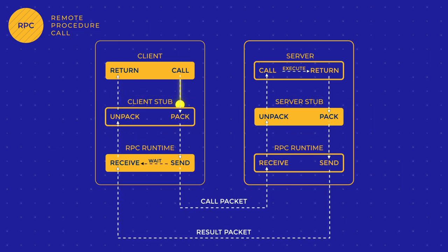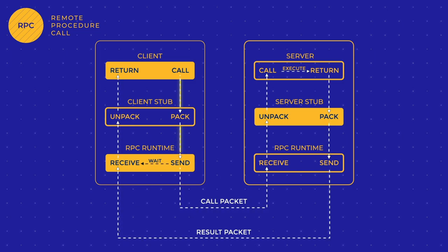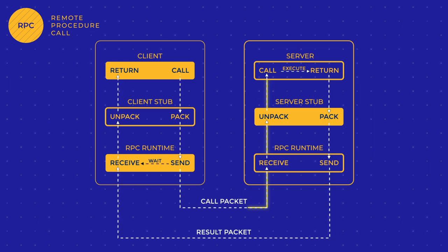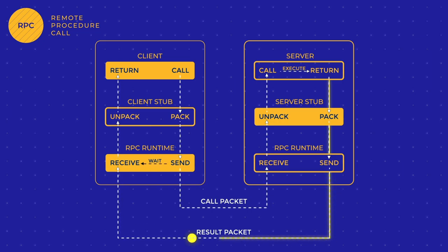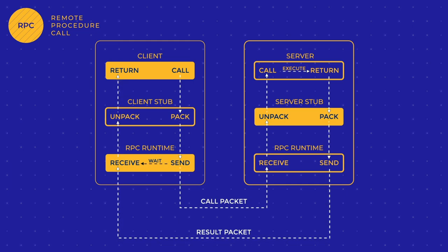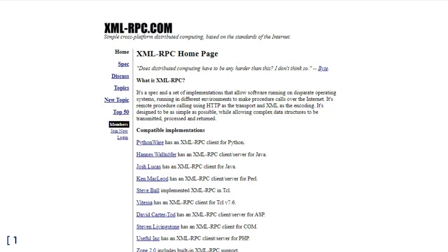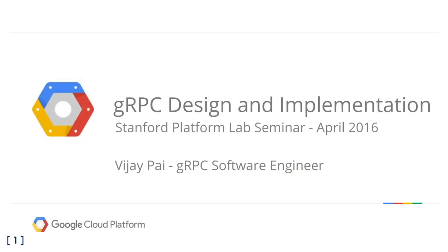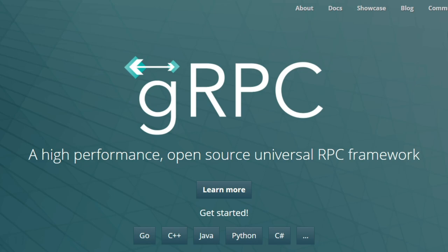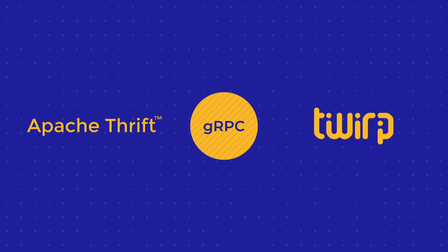When a client calls a server via an RPC API, a client stub converts parameters used in the function call. Then a server stub deconverts them on its side and executes the function. After the server stub converts the result back for the client, a client stub deconverts them. The RPC pattern has been around since the 80s, starting with XML and later JSON-based versions. But in 2015, Google came up with a general-purpose RPC, or gRPC.